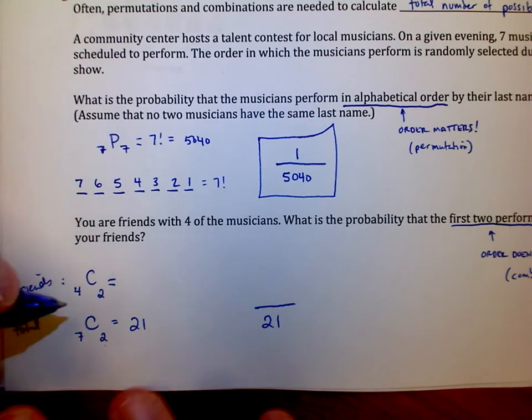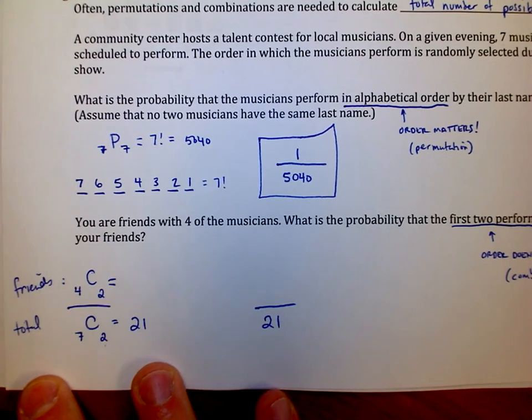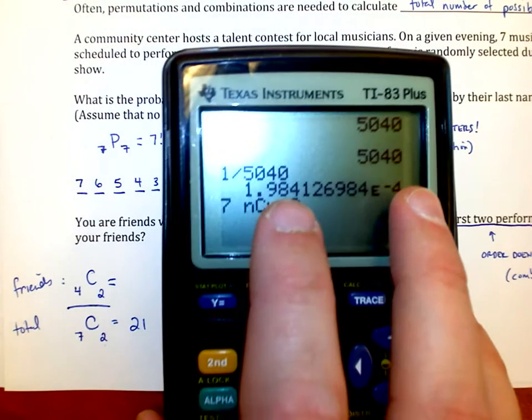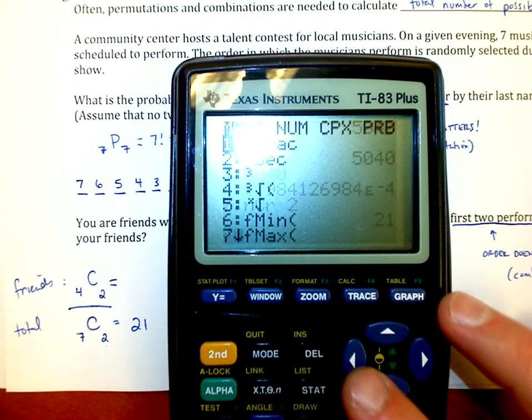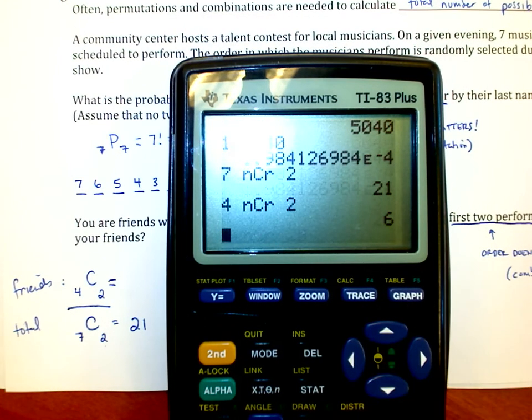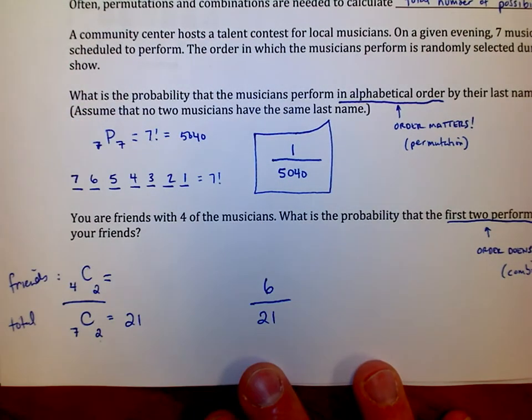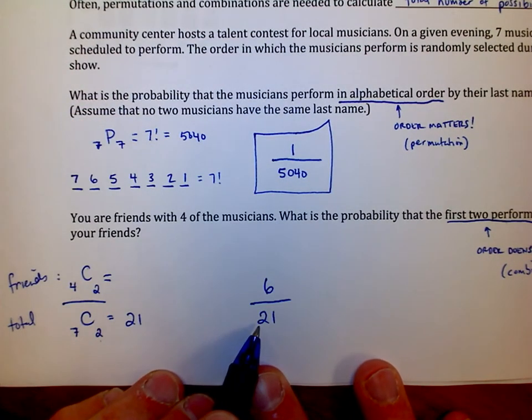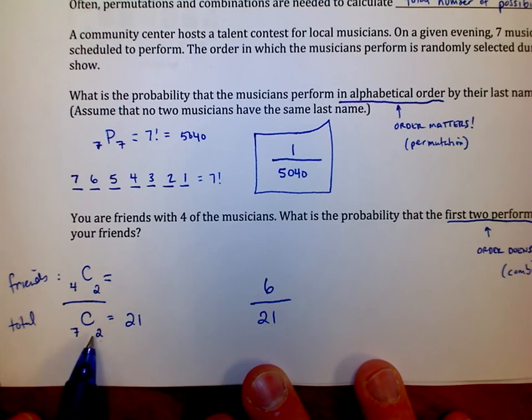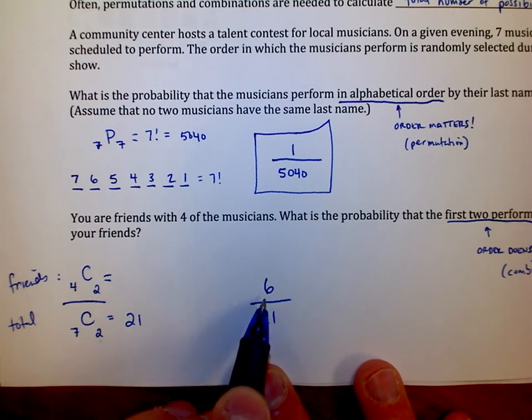And that's going to tell me the top of my fraction. And so if I go in my calculator, I do 4 NCR 2. That tells me that I have six different ways that I can group my four friends. So I have 21 ways that I can group in twos—21 ways that I can group the seven musicians, six ways that I can group my four friends.